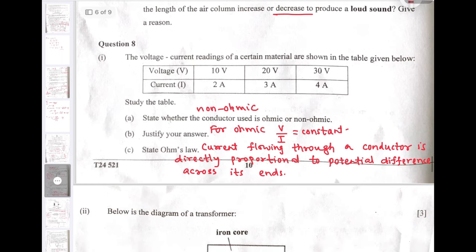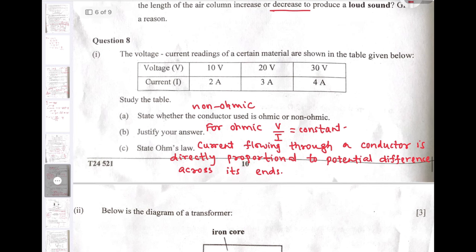Question number 8: The table is given and we need to identify whether the conductor used is ohmic or non-ohmic. The answer is conductor is non-ohmic because the ratio of V and I must be constant. But if you take the values of V and I and find the ratio, you are getting different values. So the given conductor is non-ohmic. State Ohm's law: It states that current flowing through a conductor is directly proportional to the potential difference applied across its ends.